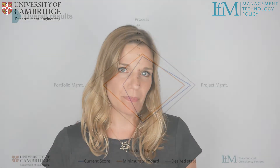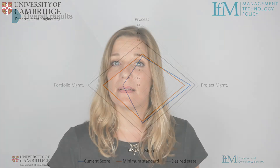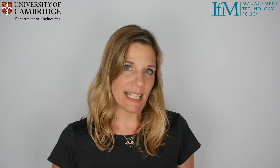Let's take a look at our NPI performance overall. The good news is that we are more or less at the minimum standard in each of the process, projects, and products maturity. The bad news, however, is that we are below our desired standard in each of these categories, and that we are falling significantly below both the desired and minimum standards in our approach to portfolio management.